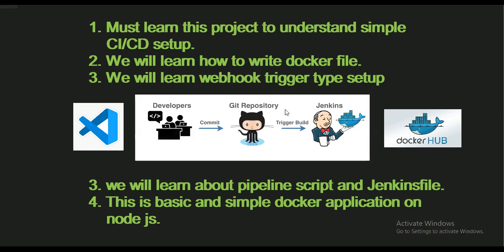Once the code is on GitHub, we will integrate Jenkins with GitHub using a webhook trigger, so as soon as a commit is done, the job will start automatically and begin building. Then we will be installing Docker on the same server as Jenkins, where we are going to create the Docker image.